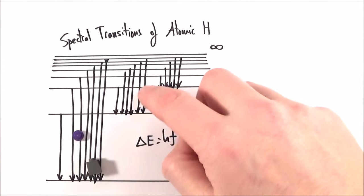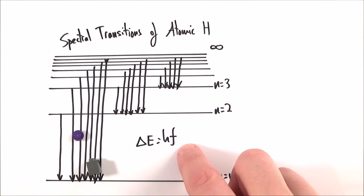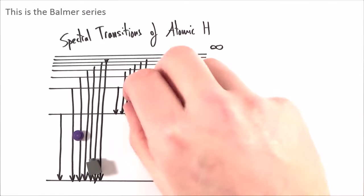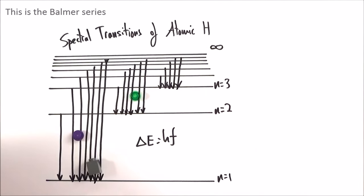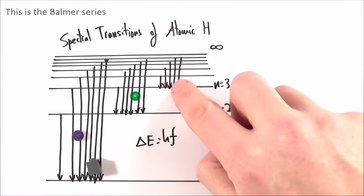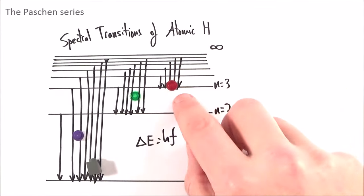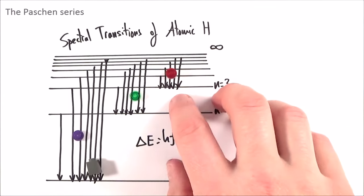In the middle part they aren't as energetic, the energy changes aren't as big so the frequency isn't as big. Therefore we have visible light given off at this part of the spectrum. And finally these are fairly small energy changes so we have infrared photons which are given off.